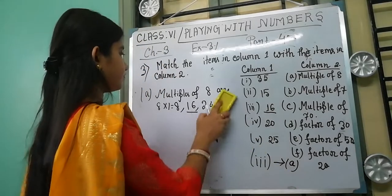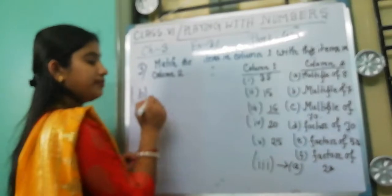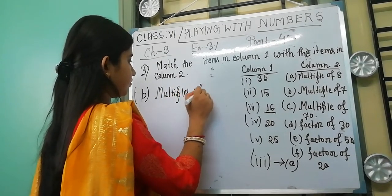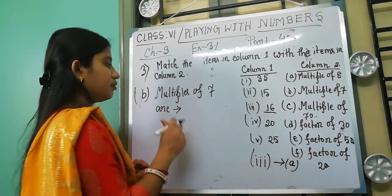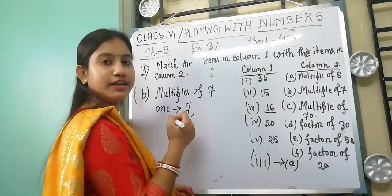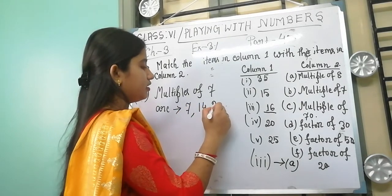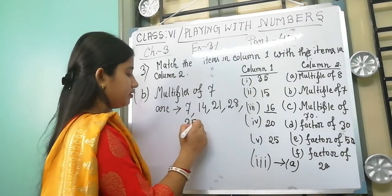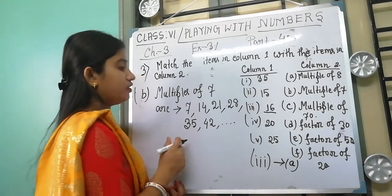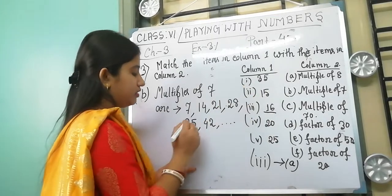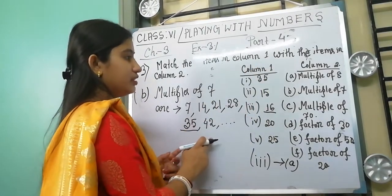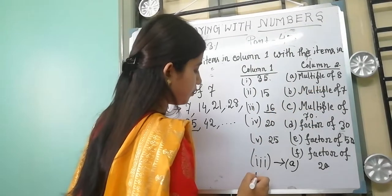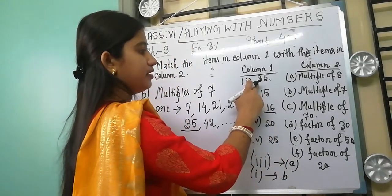Next, B: multiple of 7. So we find multiples of 7. 7×1=7, 7×2=14, 7×3=21, 7×4=28, 7×5=35, 7×6=42, and so on. We see that 35 is in column 1 and also a multiple of 7. So number 1 matches with B — 35 is a multiple of 7.